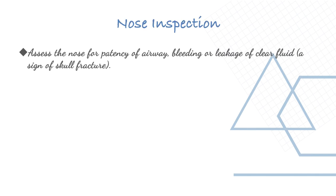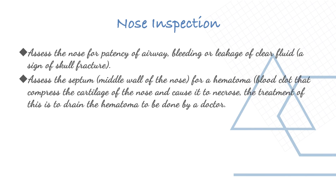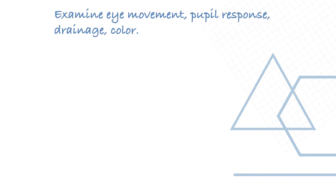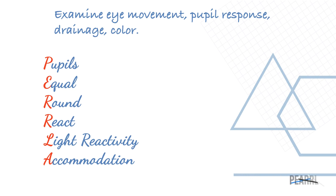For nose inspection, assess for patency of the airway, bleeding, or leakage of clear fluid. Assess the septum for hematoma and palpate the face for fractures. Pupils are assessed using the PEARL mnemonic: Pupils Equal And Round, Reactive to Light and Accommodation.